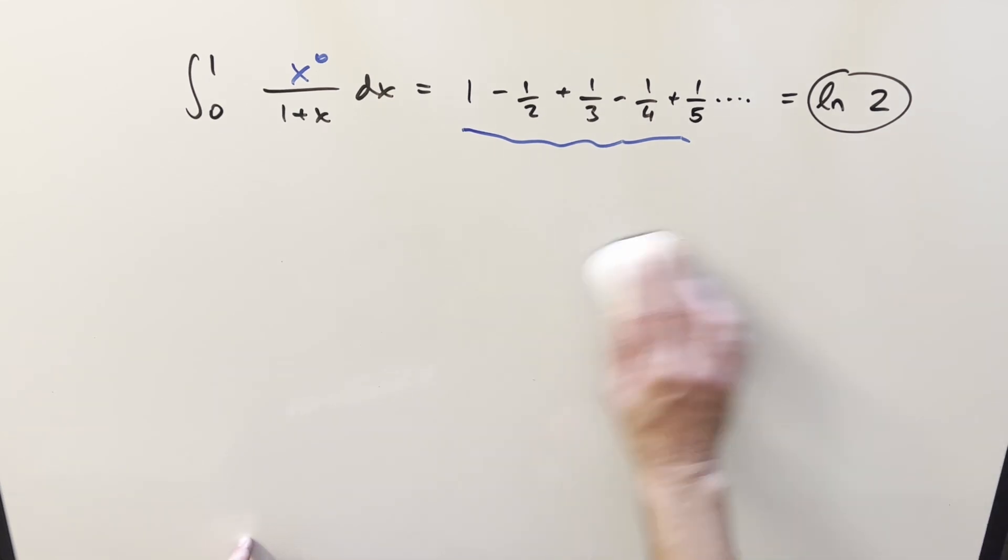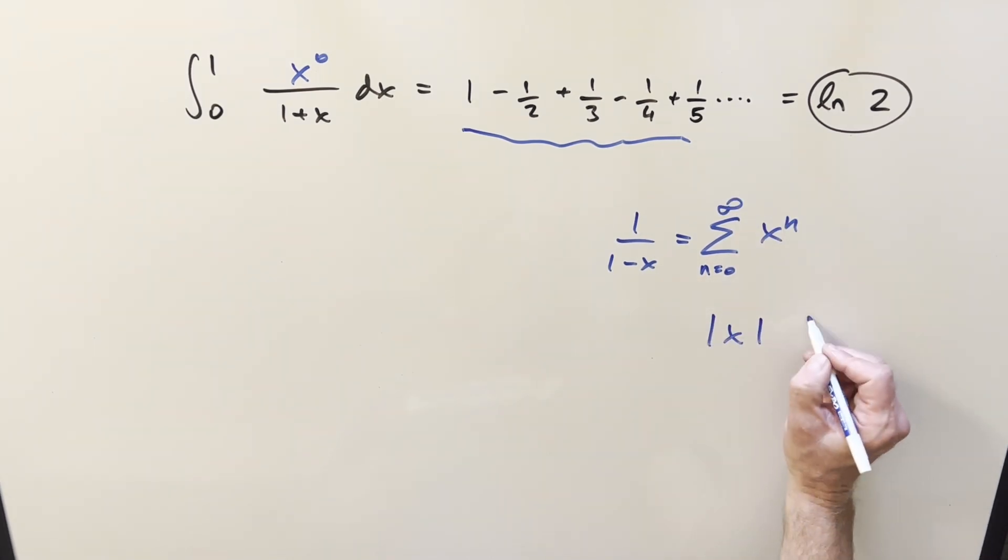So let's see how this is going to work. The thing where I want to start from is just with our geometric series, we know that for 1 over 1 minus x, this is going to be the same thing as the sum from 0 to infinity of x to the n when absolute value of x is less than 1.